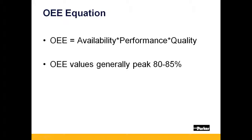Once you've developed a means of calculating each of these metrics which apply to your processes, OEE is simply calculated by multiplying these three metrics together to arrive at a final percentage. Typical OEE values vary and generally do not exceed 80 to 85%.